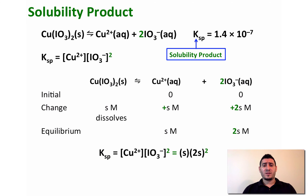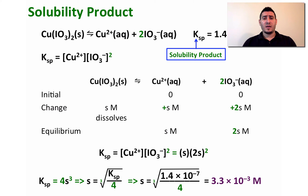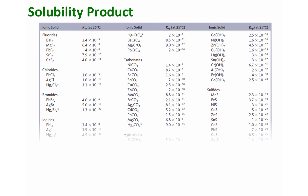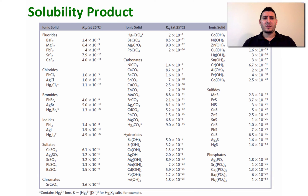Substituting into the Ksp expression: Ksp = S × (2S)² = 4S³. Therefore S = ∛(Ksp/4). Replacing the Ksp gives the solubility of copper(II) iodate as 3.3×10⁻³ molar. Note that the unit of solubility is always molar, regardless of the Ksp units. In the reference table you can find Ksp values for many ionic solids in water at 25°C — remember these values are not valid if the temperature changes.